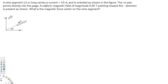A uniform magnetic field of magnitude 0.50 tesla pointing toward the negative direction is present as shown. So inside is positive x and outside is negative x. Therefore B is negative 0.5 tesla in the i-direction.